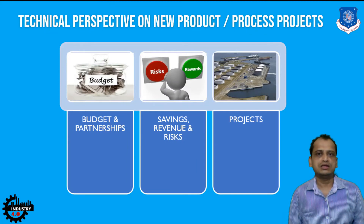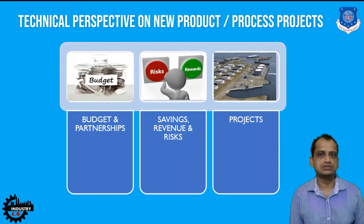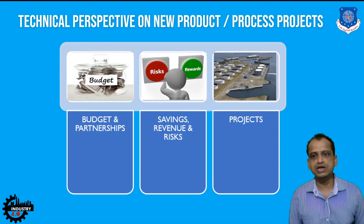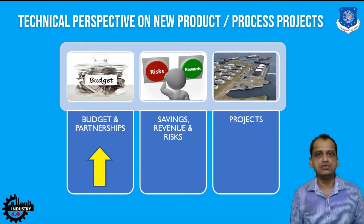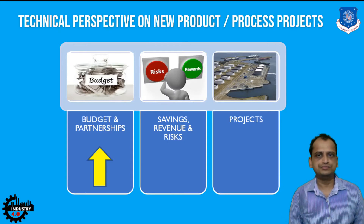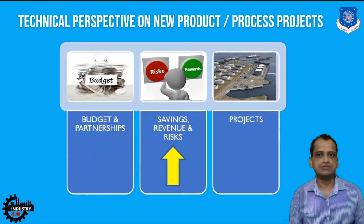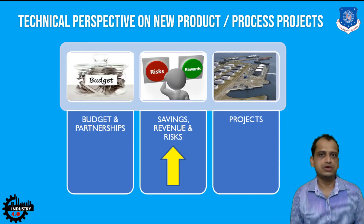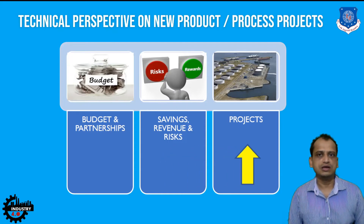If we talk about technical perspectives in Industry 4.0 implementations for new product and process development, three technical perspectives exist. First is budget and partnerships: what budget and resources you have, and what partnerships you want when incorporating Industry 4.0 technologies. Second is savings, revenues, and risk: what savings you have and what risk is involved when using certain technologies. Third is the projects you will focus on when implementing Industry 4.0 technology.